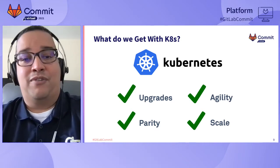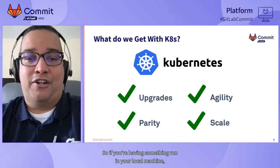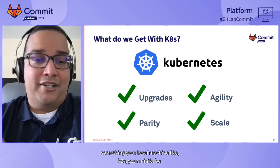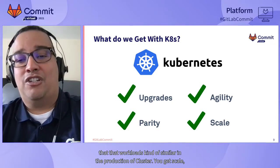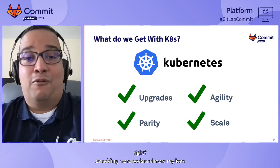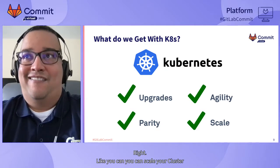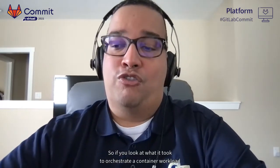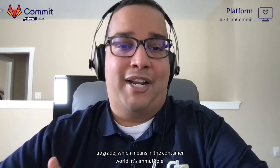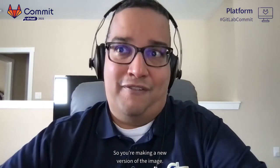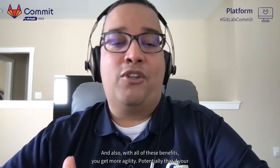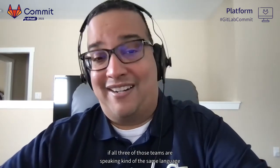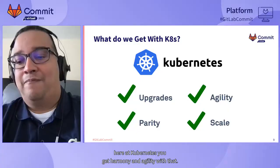So what do you get with Kubernetes? You get parity — something running on your local machine with k3s or minikube should run similarly in a production cluster. You get scale — adding more pods, replicas, or worker nodes is trivial. Upgrades are easier because container images are immutable; you just redeploy a new version. And you get agility when your ops, dev, and infrastructure teams all speak the same Kubernetes language.